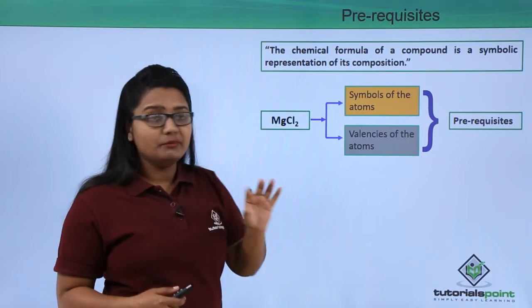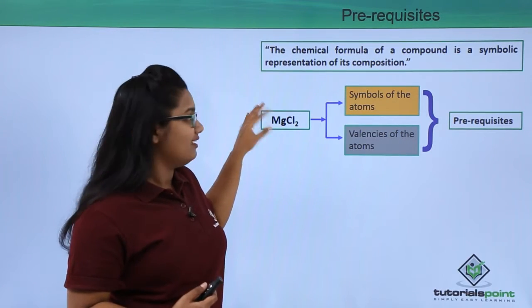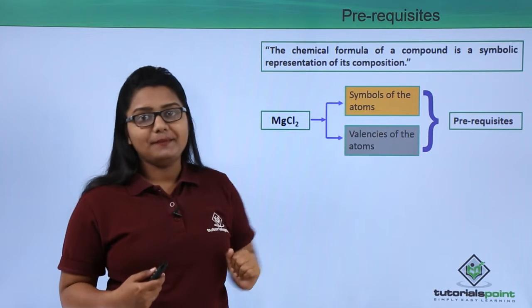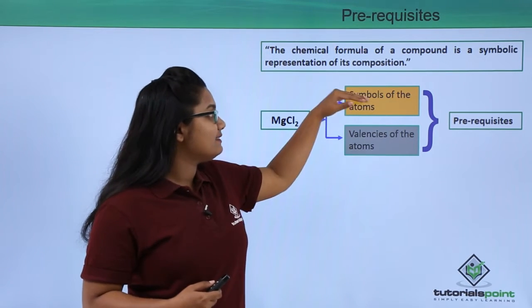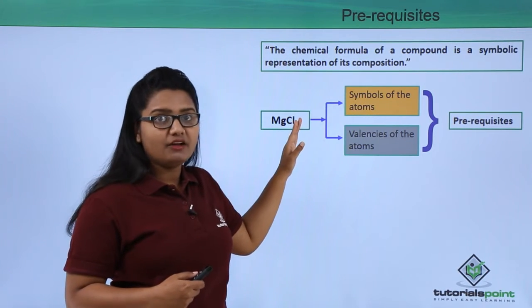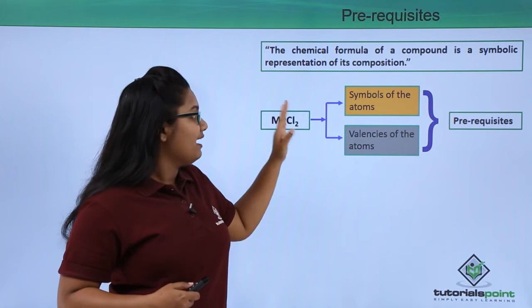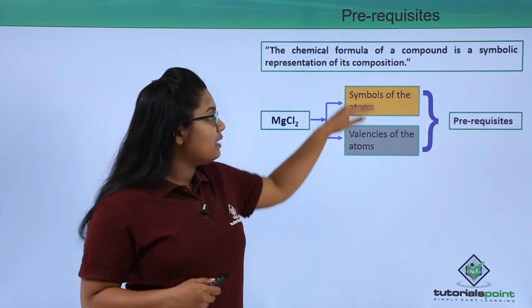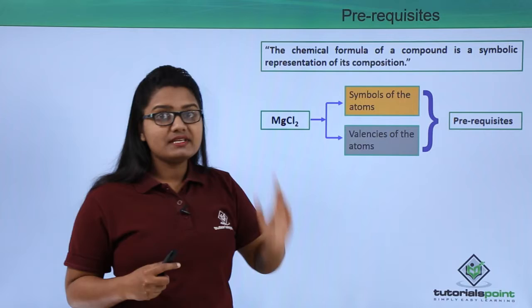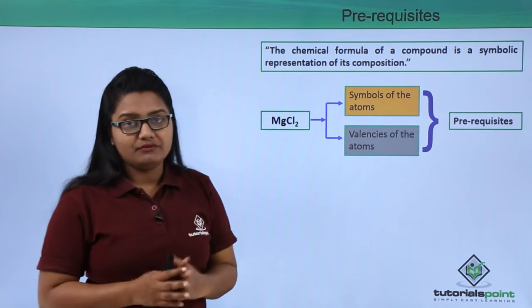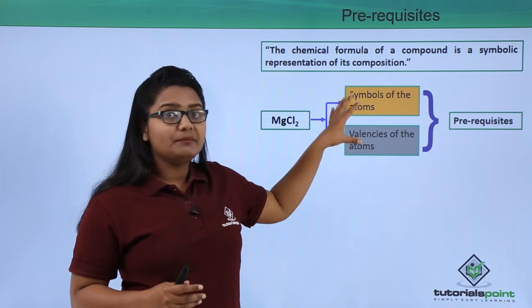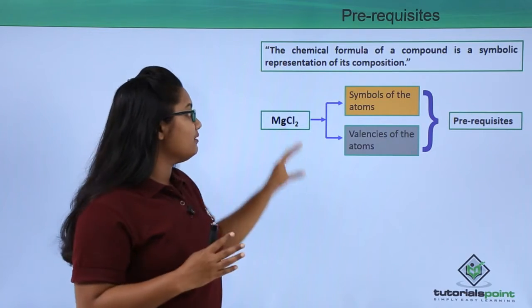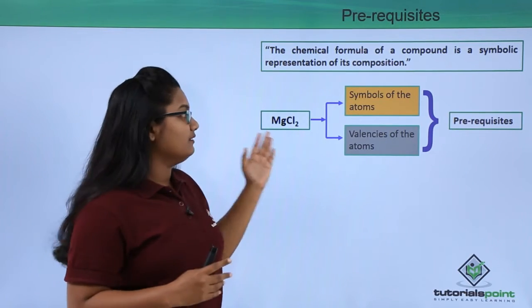For writing a chemical formula like that of magnesium chloride, we need two things: the symbols of the atoms present in the compound, and the valencies of those atoms. These two are the prerequisites of writing a chemical formula and must be kept in mind.